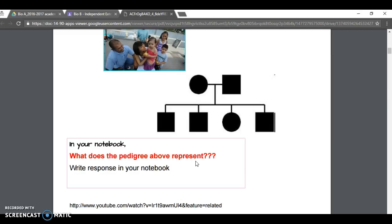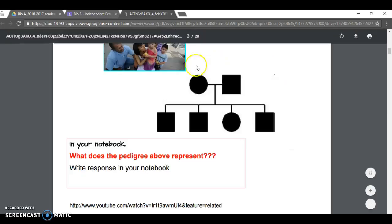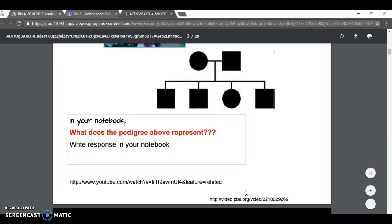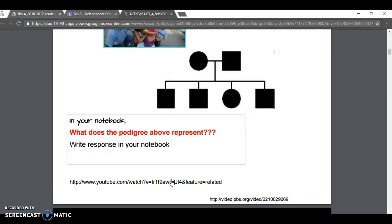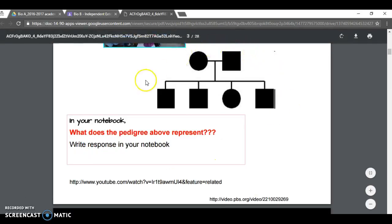Here we have slide three. You have a pedigree, and this time all you have to do is write it in words again. Then we have some URLs here, another PBS video and a YouTube video that'll help you start understanding what pedigrees are and what these symbols represent.